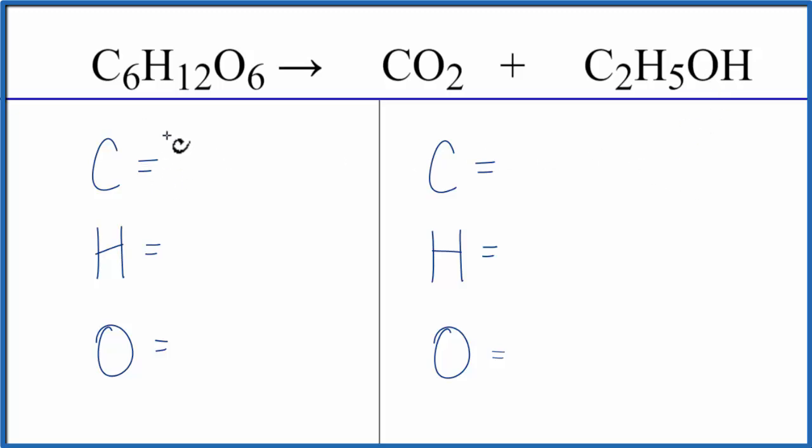So let's balance the equation, count the atoms up. We have 6 carbons, 12 hydrogens and 6 oxygens. On the product side we have 1 carbon plus the 2, so that gives us 3 carbons.